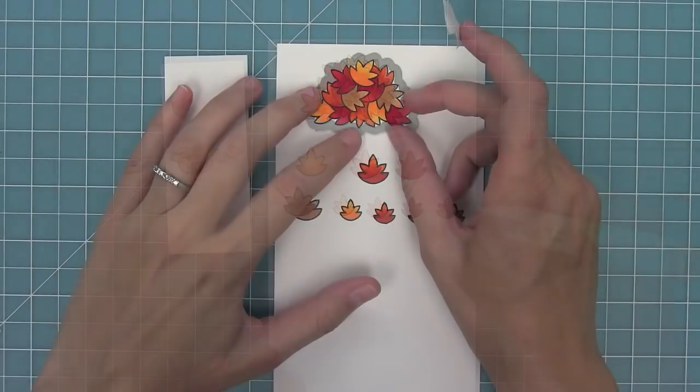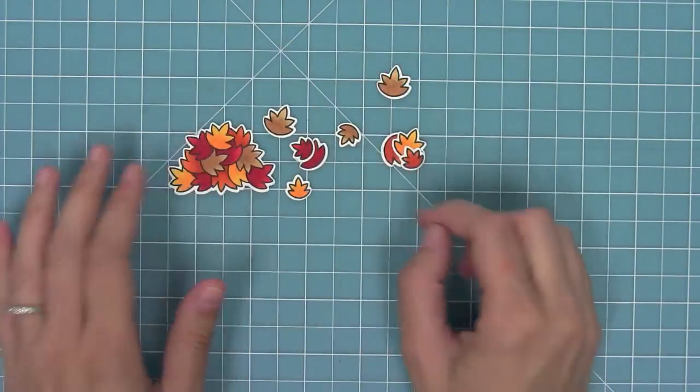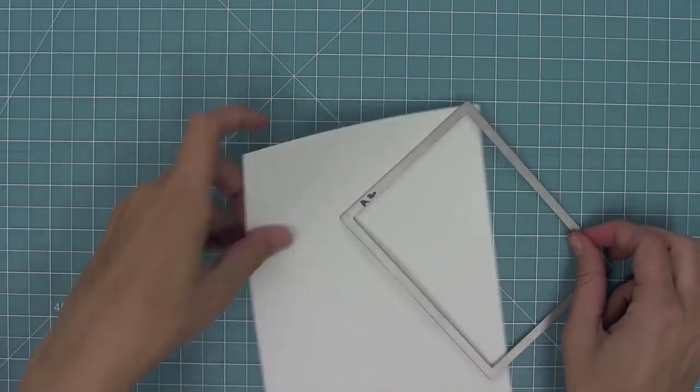Next up I'm going to use the coordinating dies to cut out all of these images. I'll line them up and hold them in place with some post-it note tape, run them through my die cut machine, and now I have a ton of leaves to work with.